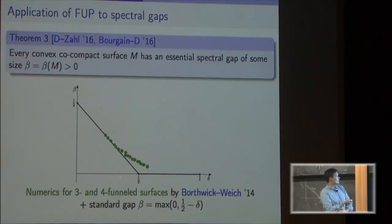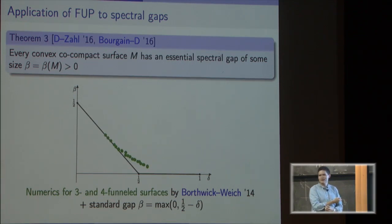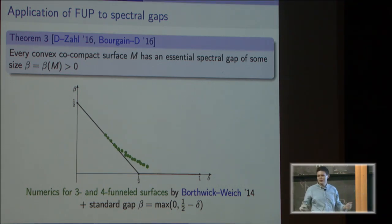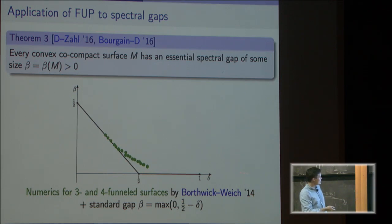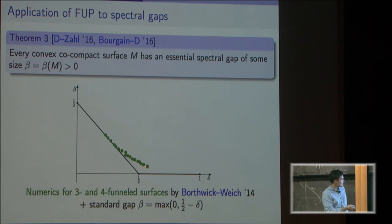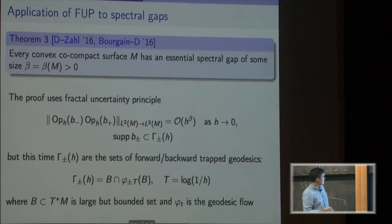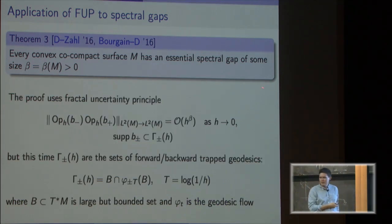Here is some quick numerics by Borthwick and Weiss showing the approximate sizes of the gaps, and you can see that the gap doesn't seem to be zero. The proof also uses the same fractal uncertainty principle, but now the sets Γ^± consist of geodesics that are trapped — staying in the convex core of the manifold for a long time — rather than not passing through a hole.